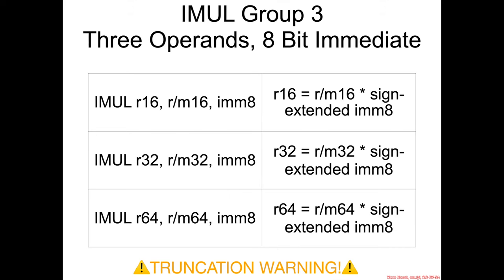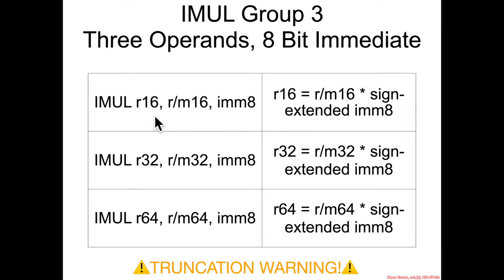Group three has three operands with 8, 16, and 32-bit variations. In the 8-bit form, you take a 16-bit value and an 8-bit immediate, which is sign-extended up to 16 bits, multiply, and store back into a 16-bit value — so truncation is possible. For 32 and 64 bits, the 8-bit immediate is sign-extended to 32 or 64 bits respectively, then multiplied and stored back.